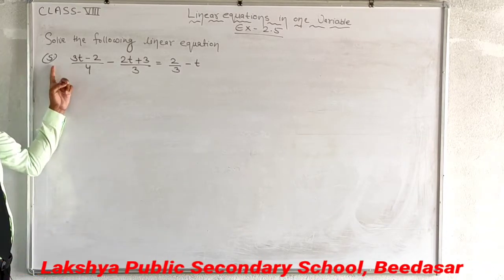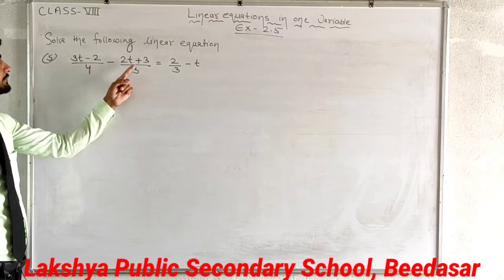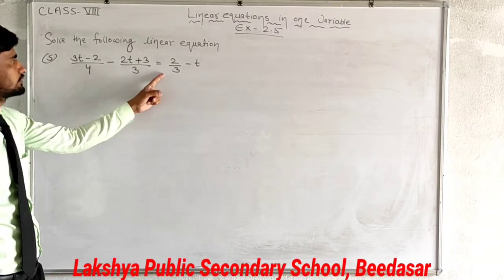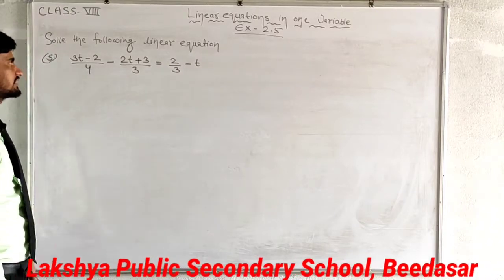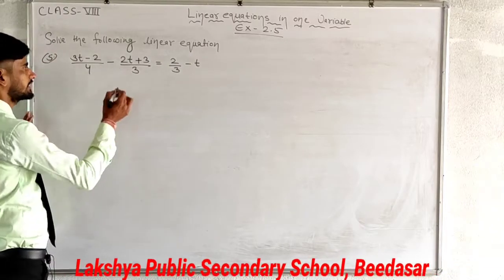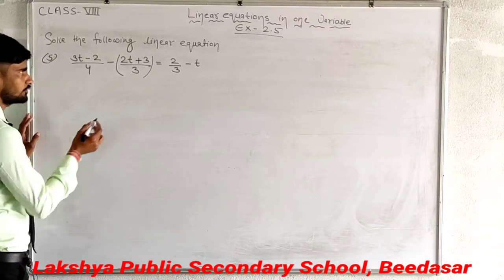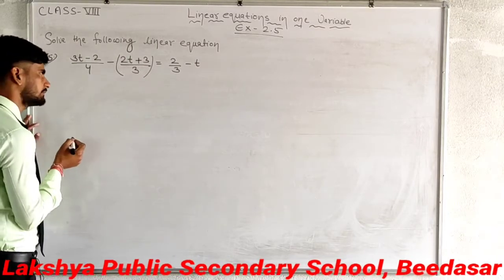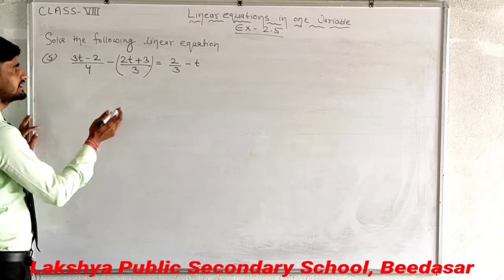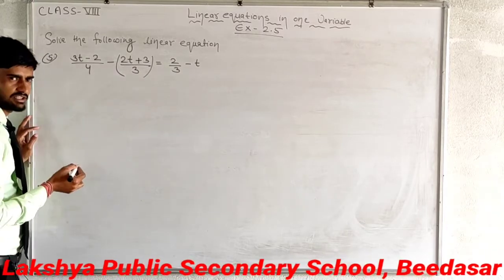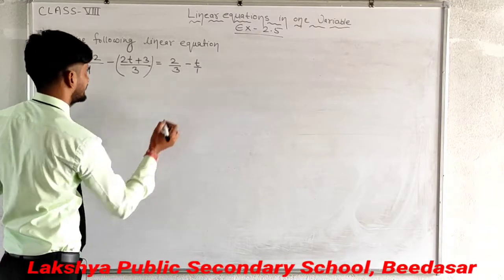Our next question: 3t minus 2 upon 4 minus 2t plus 3 upon 3 equals 2 upon 3 minus t. Note: because of the minus sign before the bracket, you must put the second term in brackets first. If there is a minus sign, the signs inside will change. So if we use brackets, we won't make a mistake. Write it as 1 on the right side as well.